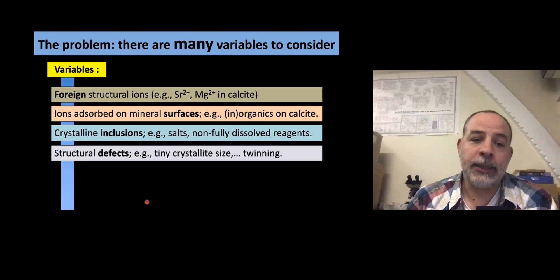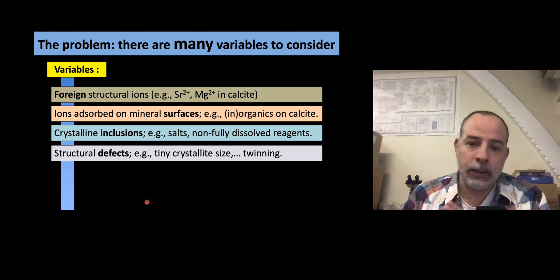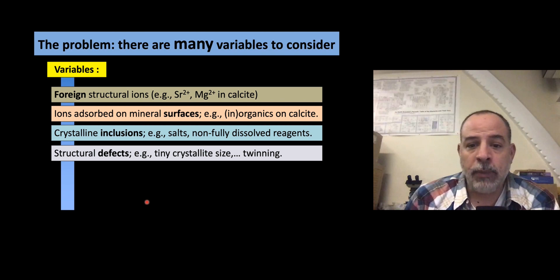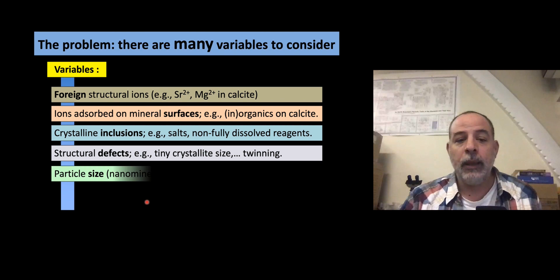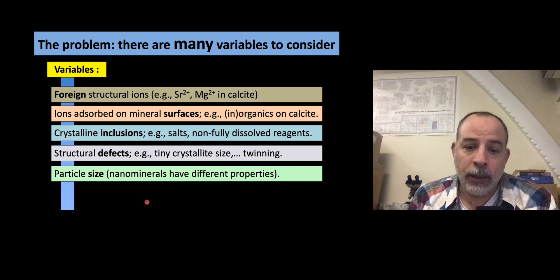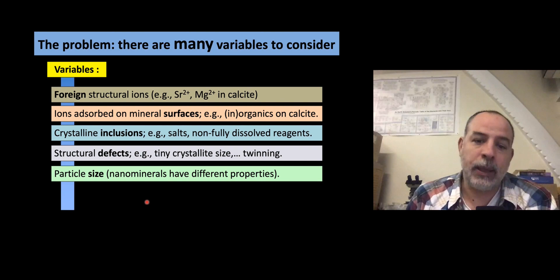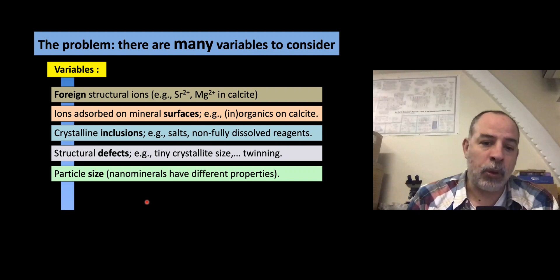Also, structural defects: sometimes we can produce minerals but the problem is that they have very tiny crystallite size, which can be a problem when targeting specific properties. Sometimes minerals can have twinning — for optical devices, you don't want twinning. Another variable is particle size: nano-minerals have very high surface area per gram compared to micro or bigger minerals, and therefore different thermodynamic properties, so producing nano-minerals can be a problem.